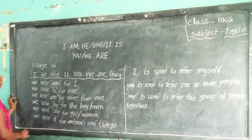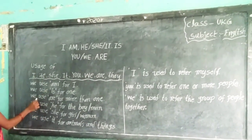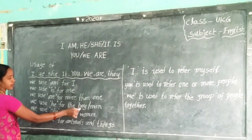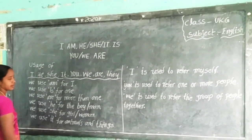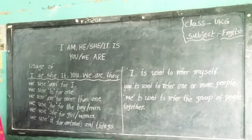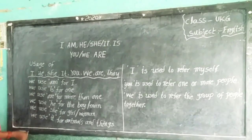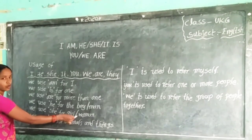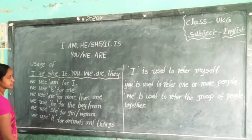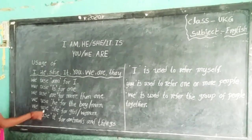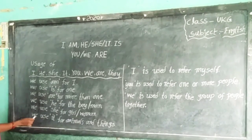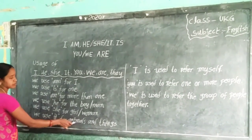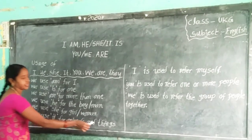Next: 'he'. We use 'he' for a boy or man. Next: 'she'. We use 'she' for a girl or woman. Next: 'it'. We use 'it' for animals and things.